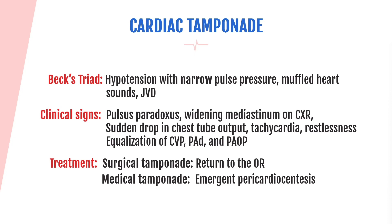Let's talk more about cardiac tamponade. You will absolutely want to memorize Beck's triad: hypotension associated with a narrow pulse pressure — where systolic minus diastolic blood pressure is less than 30 — muffled heart sounds, and JVD. In addition to Beck's triad, there are other signs and symptoms that should alert you to cardiac tamponade.